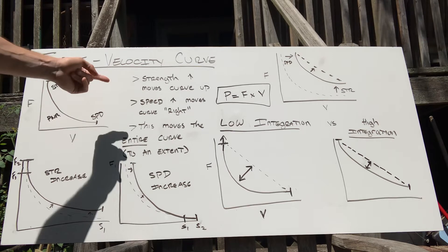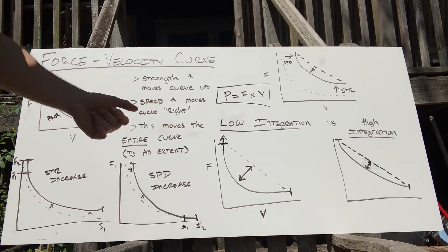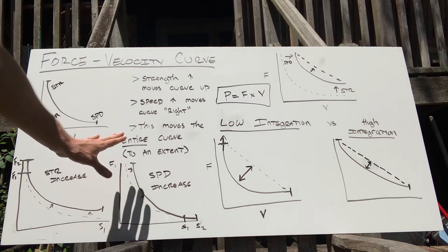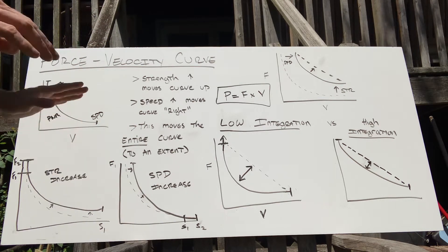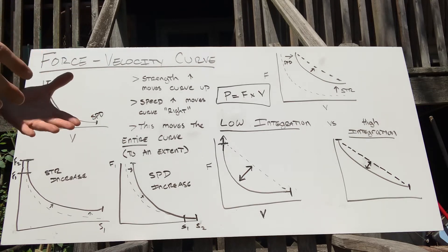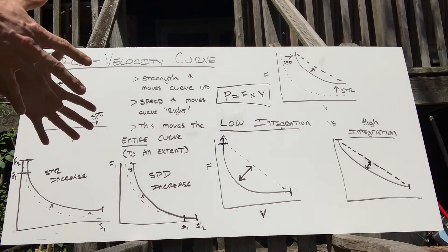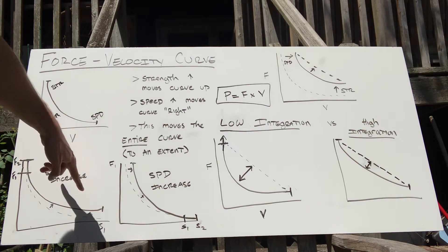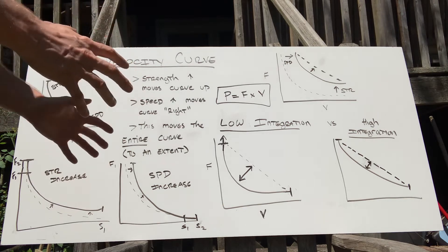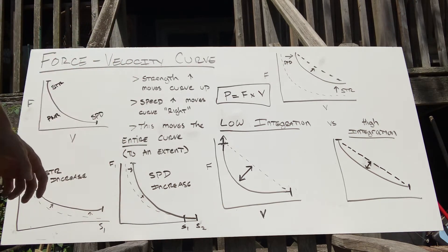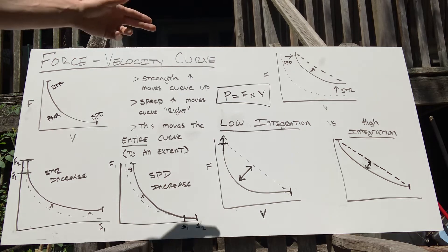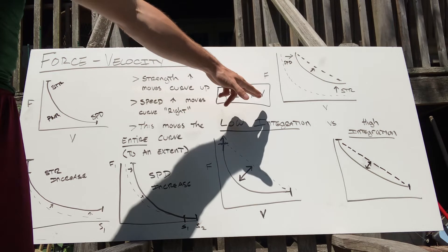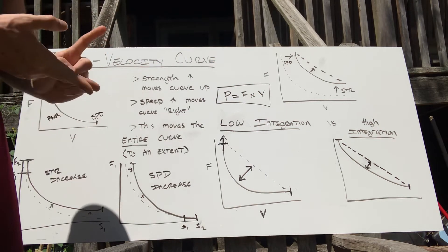Let's recap. Speed moves the bar to the right, strength moves the curve up. This typically always occurs where the entire curve moves with each other. Generally speaking, the more advanced you are as an athlete, the more that will diminish and you'll have to make really specific gains in both. But generally the curve is going to move as one solid piece each time you increase speed or strength. The concept to recap: increasing power is just a function of increasing speed or total force. Get strong, get fast, you're going to increase power.